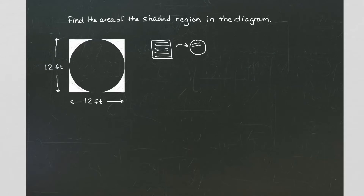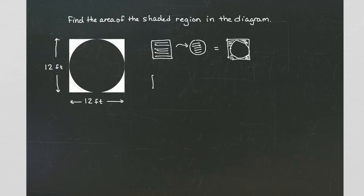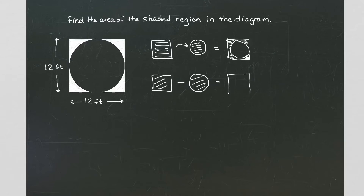If I take out a circle from inside a square, I'm going to get my resulting area, which is the square with the circle taken out of it. This creates the base for how to calculate the area for that shaded region. I'm going to start with the area of my square, and then I'm going to subtract the area of the circle inside, and that's going to give me the total area of the resulting figure.